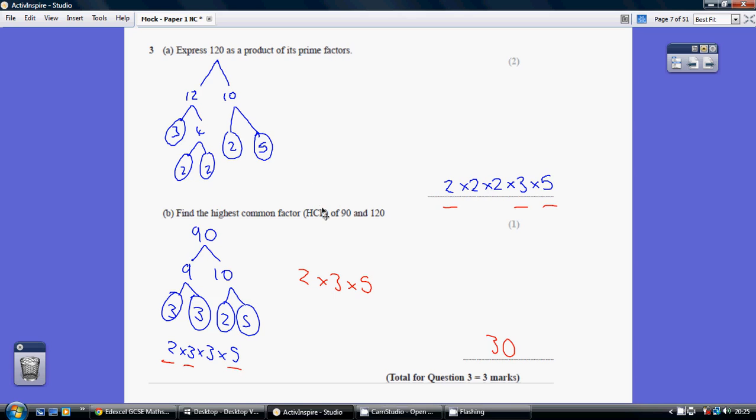Now the highest common factor are the numbers which are in both products. So a 2 is repeated, a 3 is repeated, a 5 is repeated. 2, 3 and 5, 2, 3 and 5. So multiply these together, we get 30.